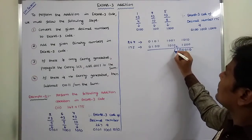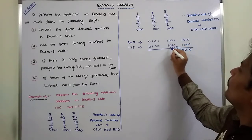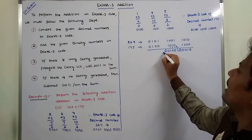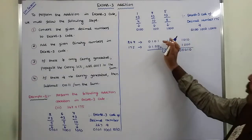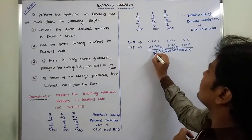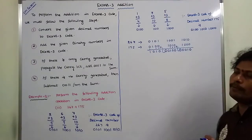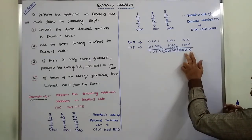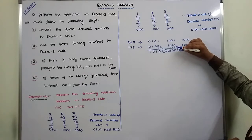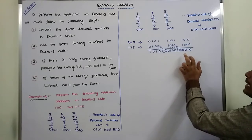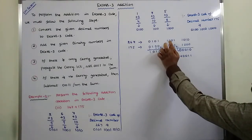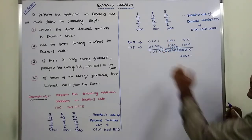For the middle 4-bit group with the incoming carry: 1 plus 1 is 0 with carry 1; 1 plus 1 plus 0 is 0 with carry 1; 0 plus 0 plus 1 is 1; and 1 plus 1 is 0 with carry 1. This carry 1 is forwarded to the next higher 4-bit group. Then: 1 plus 1 is 0 with carry 1; 0 plus 1 plus 0 is 1; 0 plus 0 plus 1 is 1; and 1 plus 1 at the MSB position is 0 with carry 1, which is forwarded to the next group.